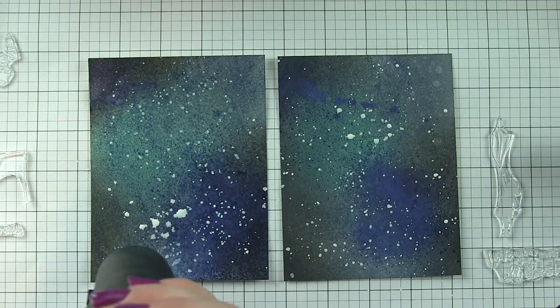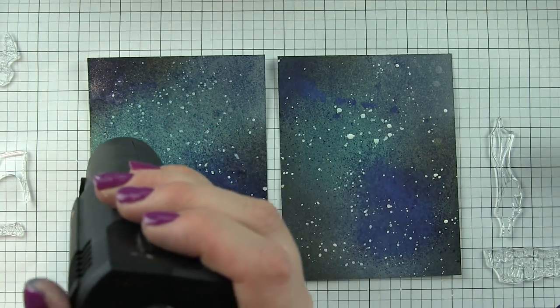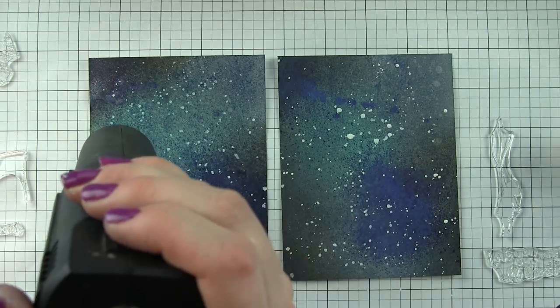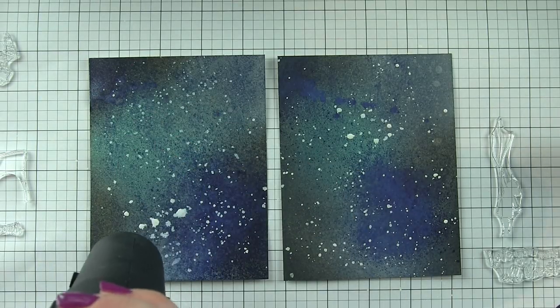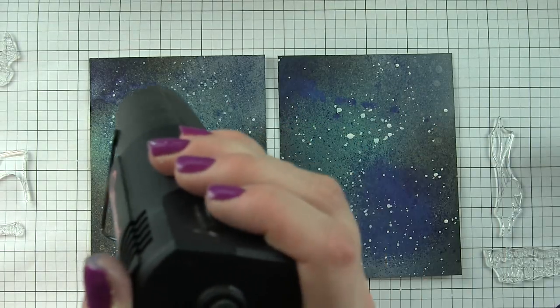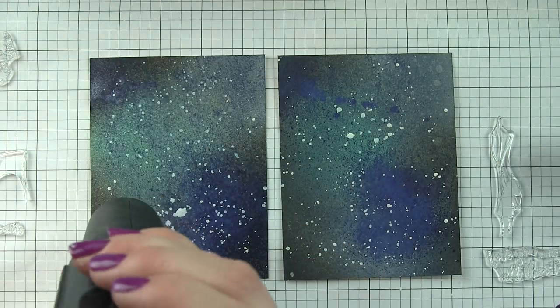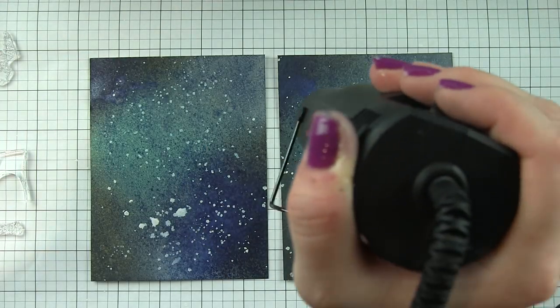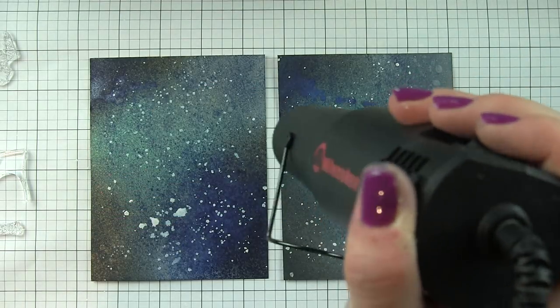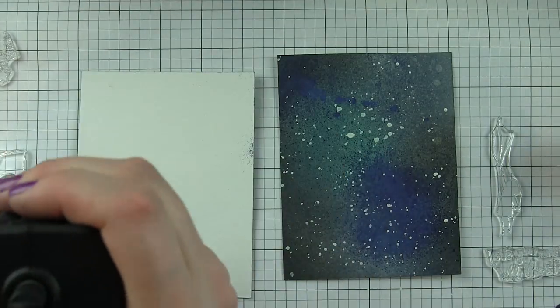At this point you can either let it air dry completely, or I was in a little bit of a hurry. I wanted to get these done, so I'm going to hit them with a heat tool. But you really need to make sure that all that ink, all that paint, the sprays are completely dry because I want to do some stamping with VersaMark ink and do some embossing. That embossing powder is going to stick to anything that is wet, so there can't be anything wet at this point.